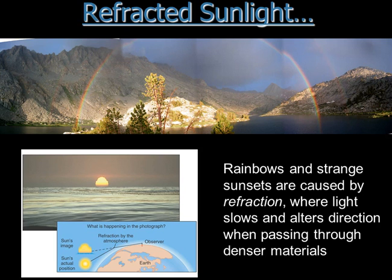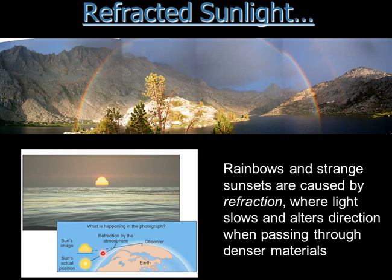Refracted sunlight is neat. If you put a straw into a glass of water and look at it, you can see it looks bent or fat — when light goes through denser objects, it slows down and changes direction. When light travels from space, which has no density, and hits our atmosphere, which is much denser, it slows down and changes direction. The sun can have already set, but because light from the sun hits our atmosphere, slows down, and changes direction, you can still see it — the sun can appear to sit on the horizon even though it's already set.